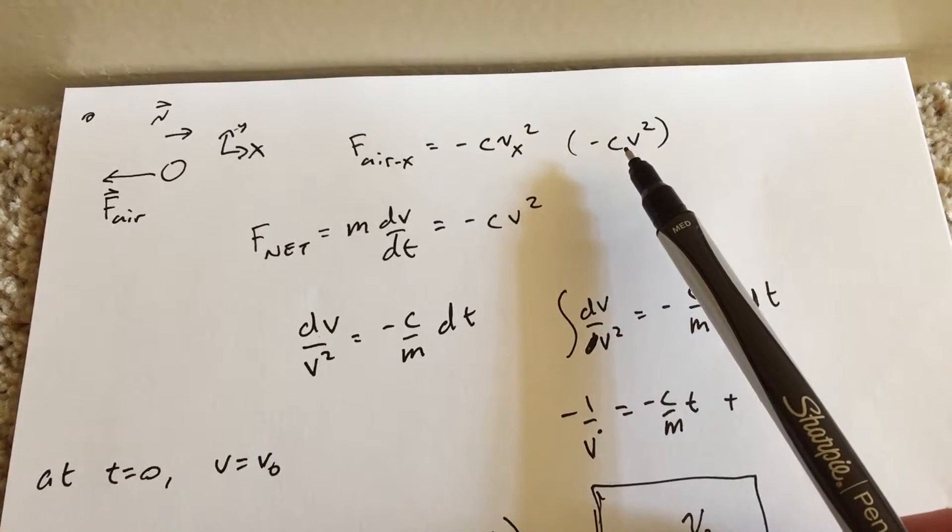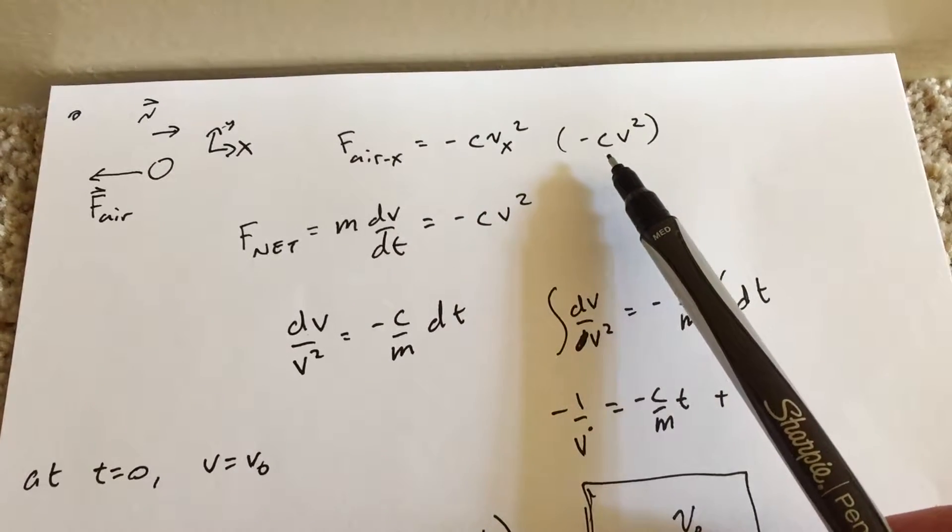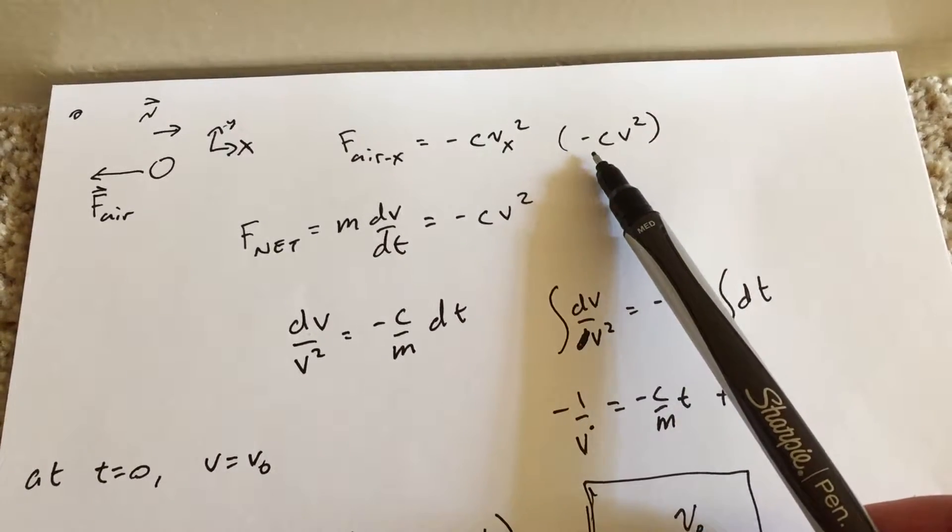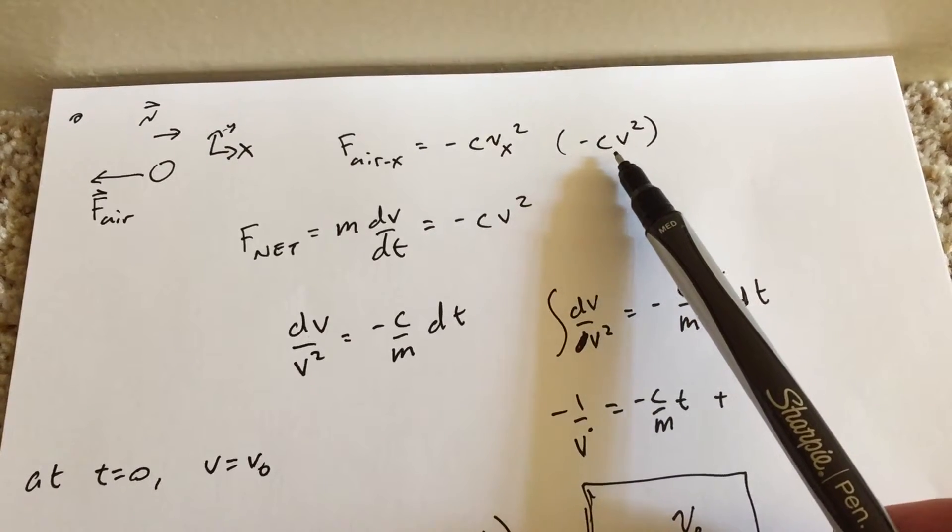And like I said, these are really vectors, but everything just simplifies to the x direction. So for simplicity, I'm going to drop the notation. So here's the drag force, negative c, which is just some constant, times v squared.